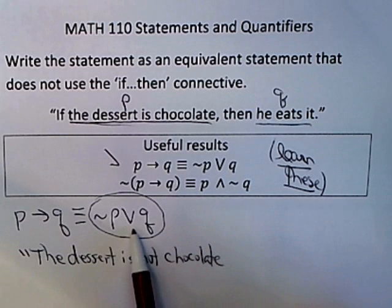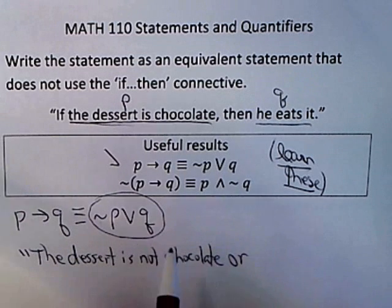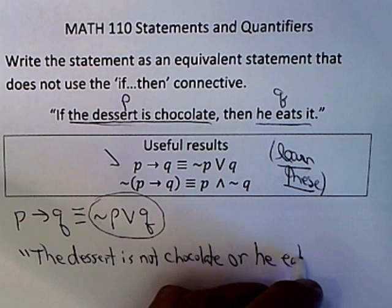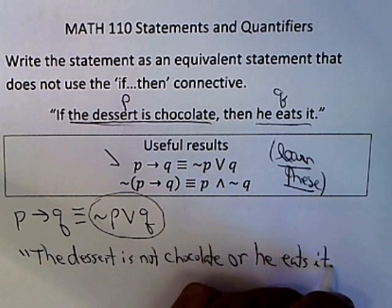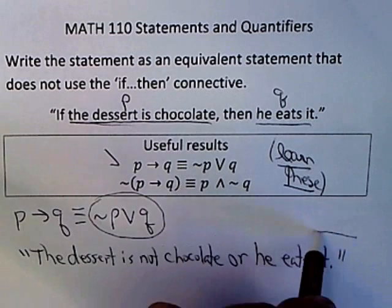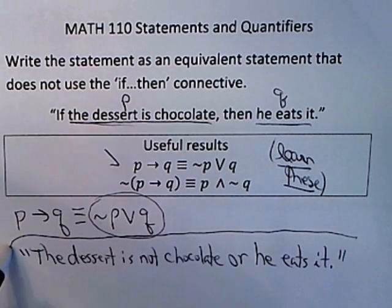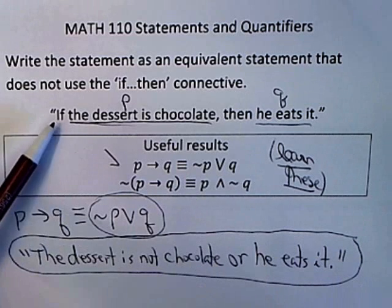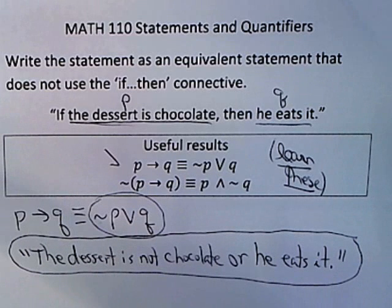And then you have an or, and finally you write q down as is, which would be he eats it. So this sentence, the dessert is not chocolate or he eats it, is equivalent to the original statement without using if-then.